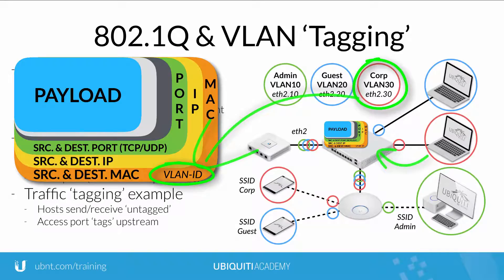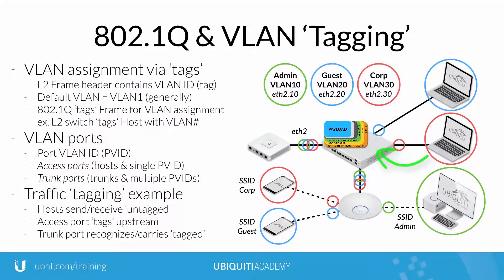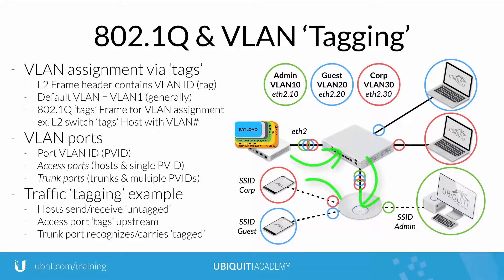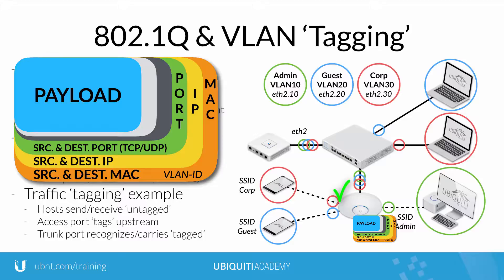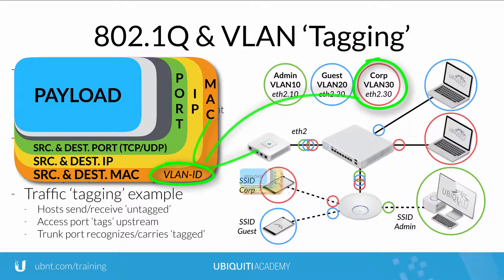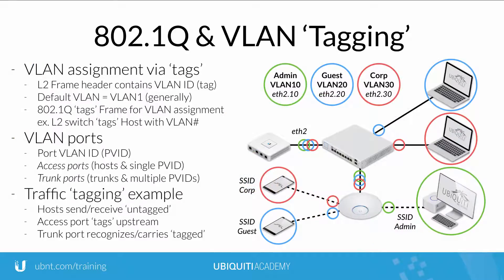With the VLAN tag now in the frame header, trunk ports recognize which areas of the Layer 2 network should carry the VLAN traffic going up or downstream. As tagged traffic moves downstream, the access port removes the VLAN tag from the Layer 2 header, so that the host receives the traffic untagged, that is, without the VLAN ID.